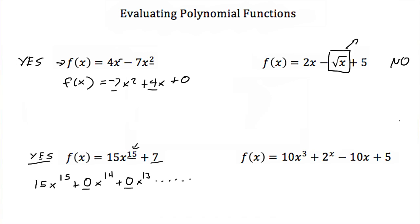Let's look at our last example. We have f(x) = 10x³ + 2ˣ − 10x + 5. This is not a polynomial function because of the term 2ˣ. Here we have a variable in our exponent, where exponents are just supposed to be whole numbers. We don't know what x is, so we can't say it's a whole number, and therefore this is not a polynomial function.